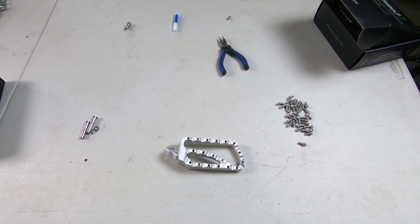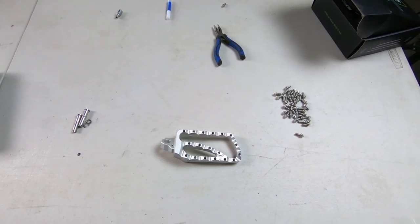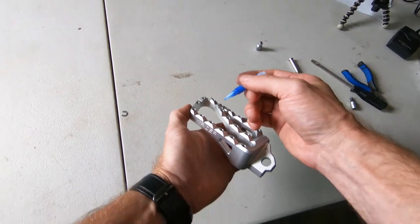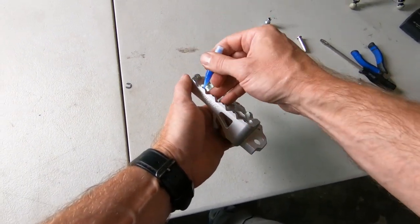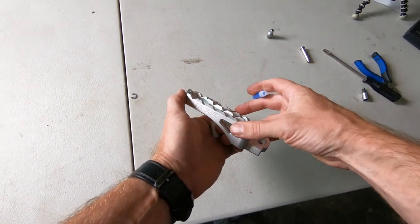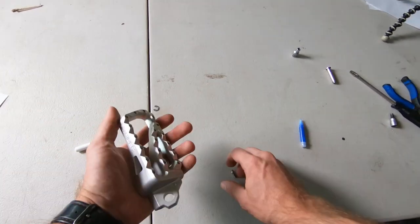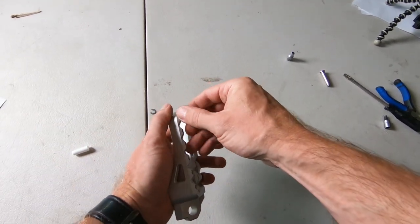Next, we'll be putting the cleats into the foot pegs. There's 18 for each foot peg. Get two drops of thread locker on the threads. Be sure to get it on the threads. Just do a couple at a time so it doesn't dry out on each cleat to make sure it doesn't rattle out.